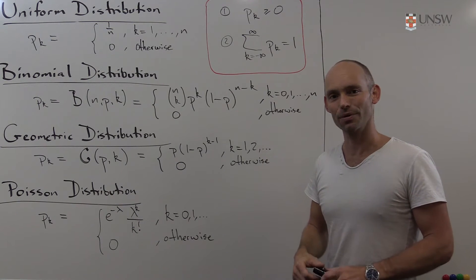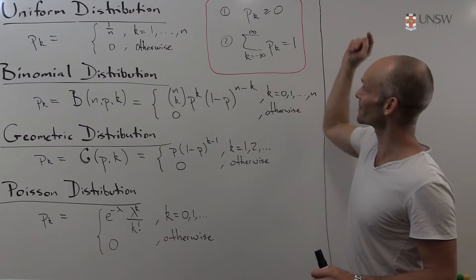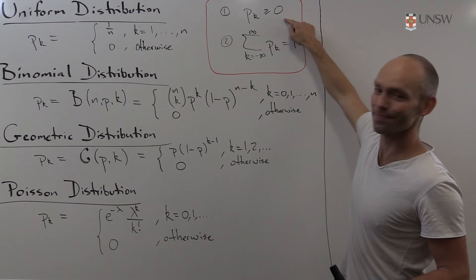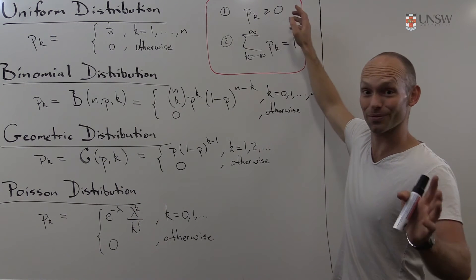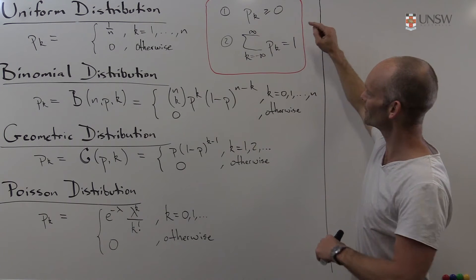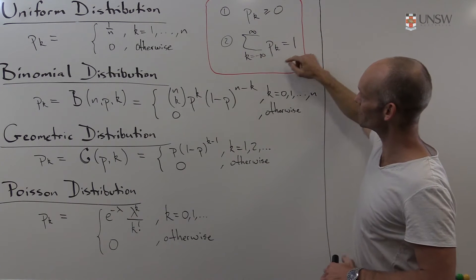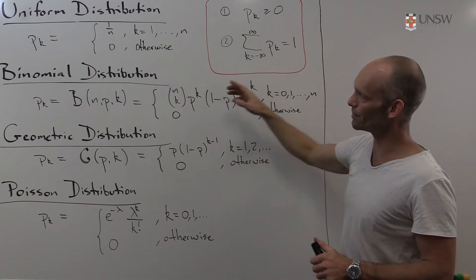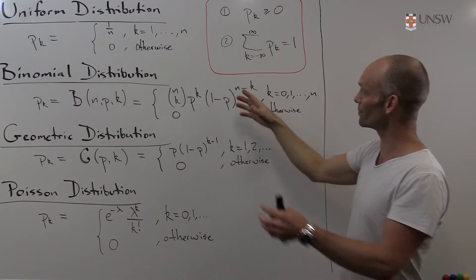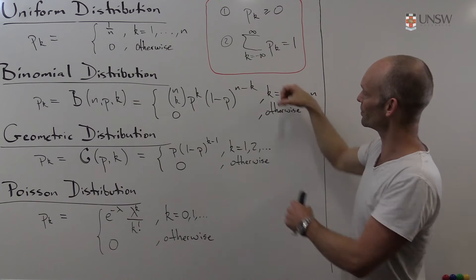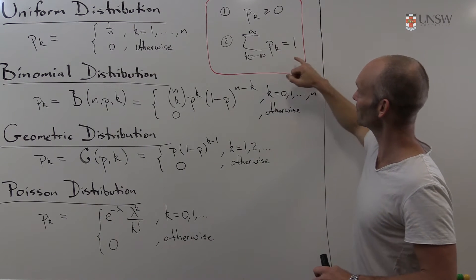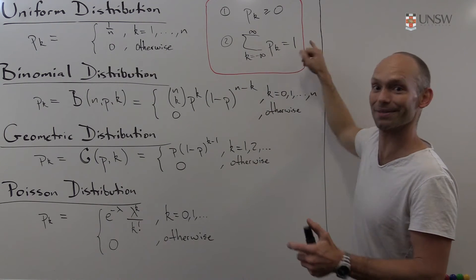What that really means is just two things. These functions are non-negative — that's easy to check just by looking at them. And also that when you add up all the function values over the real numbers, from minus infinity to infinity, you get 1.